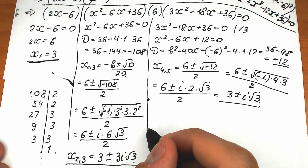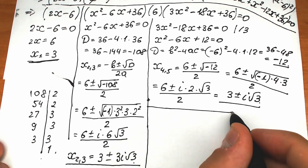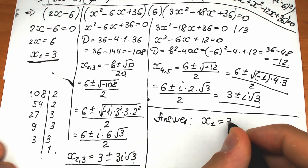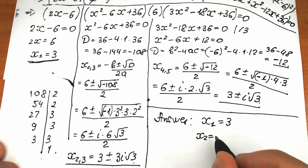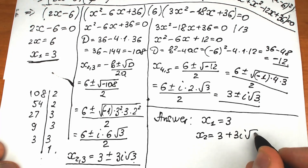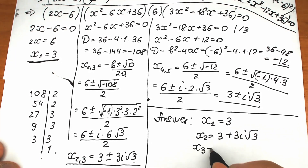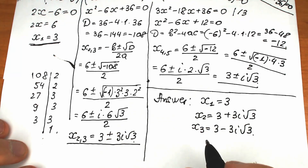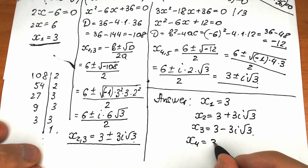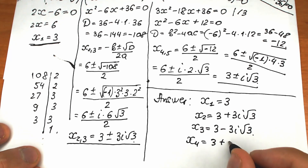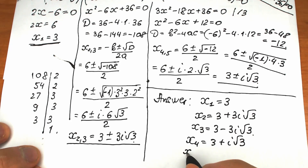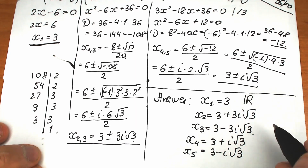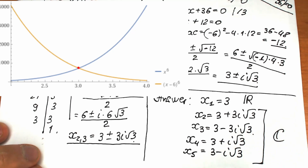Let's write our final answer. Our five roots are: x₁ equals three; x₂ equals three plus three i square root of three; x₃ equals three minus three i square root of three; x₄ equals three plus i square root of three; and x₅ equals three minus i square root of three. x₁ is a real root, and the remaining four are complex roots.